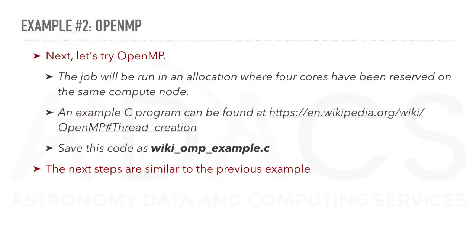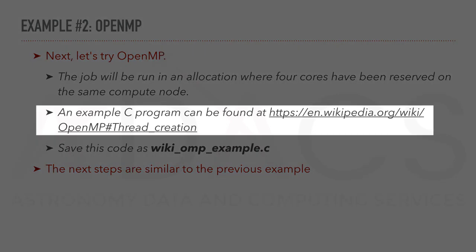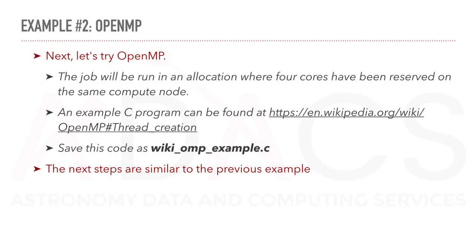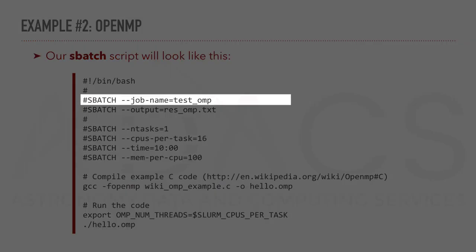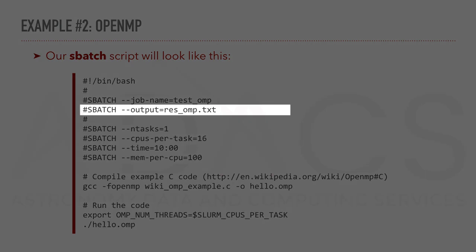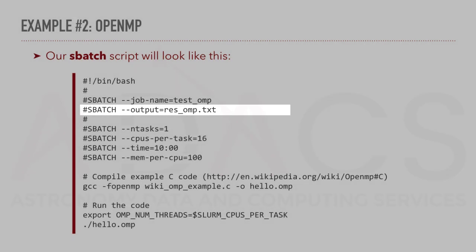Next, let's try an OpenMP example. In this case, the job will be run in an allocation where 4 cores have been reserved on the same compute node. Here again, you can download the C program at the following address. The next few steps will be similar to our previous example. Here again, we define the job name — in this case testomp — and the output file, which will be resomp.txt.